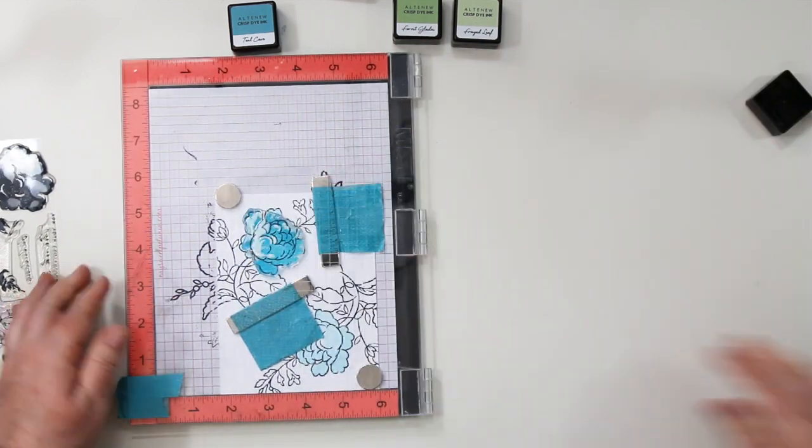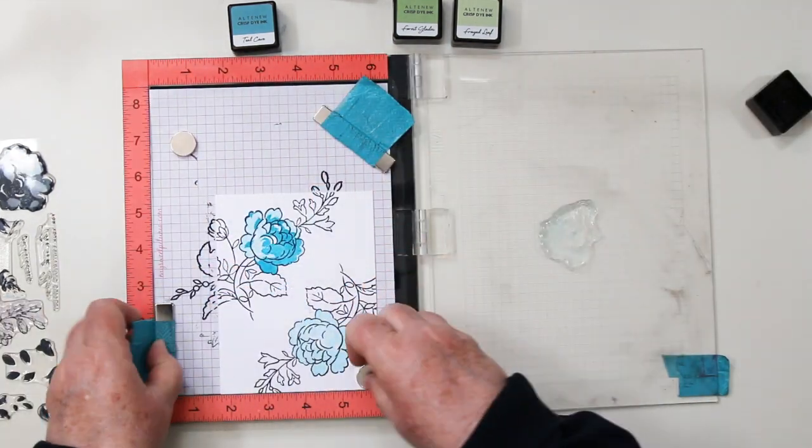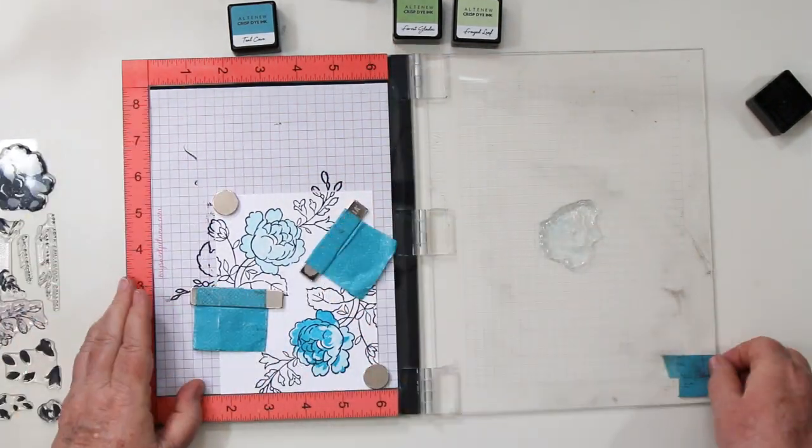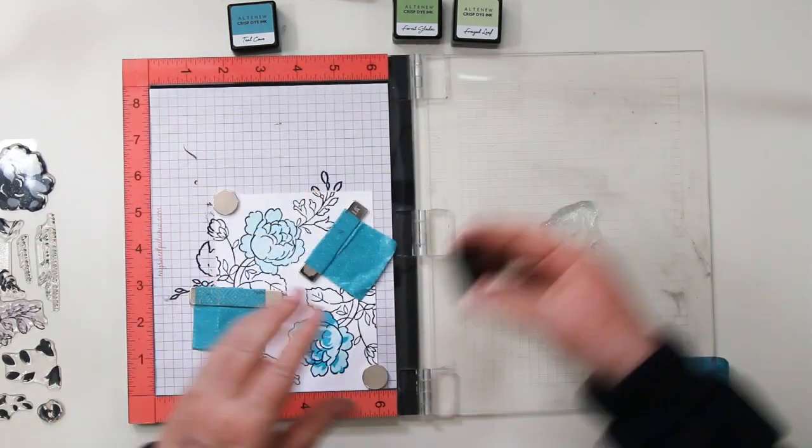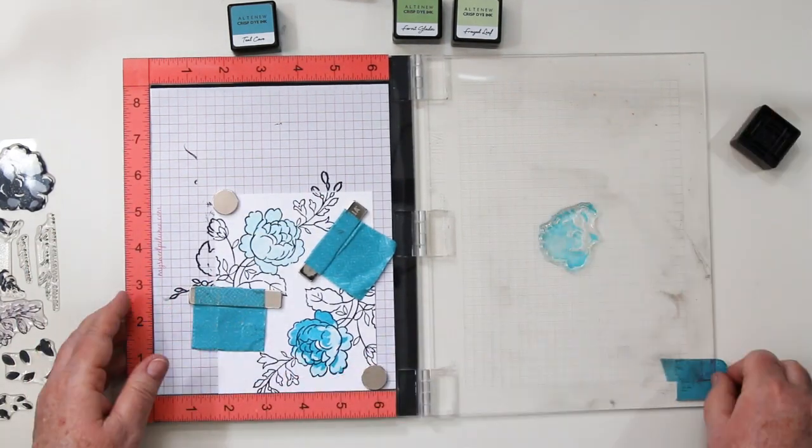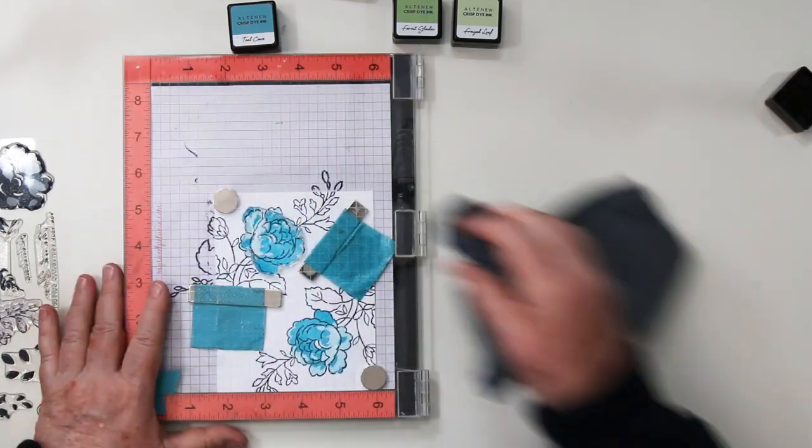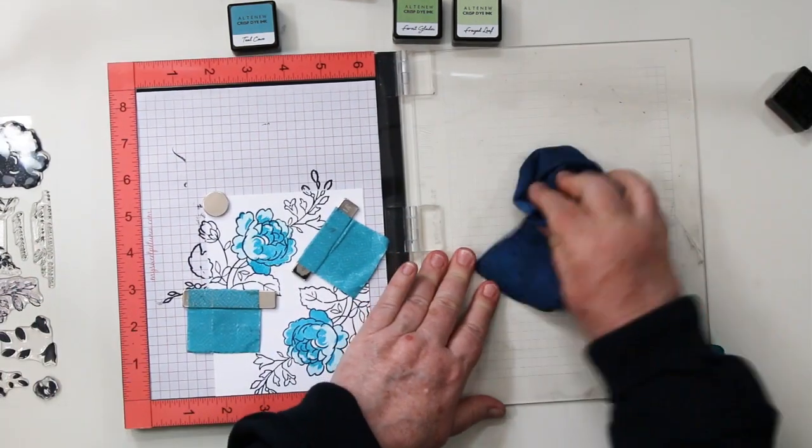You can go back to my blog. I have all the colors listed that I used in there. Flipping my card back around again, lining up the six. Now isn't this cool that you don't have to realign this every single time? Doing my stamping and again I'm going to do it twice so I have nice coverage.